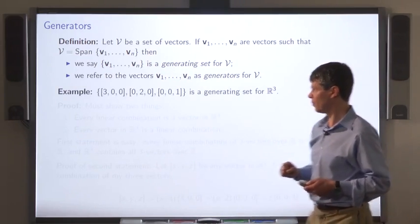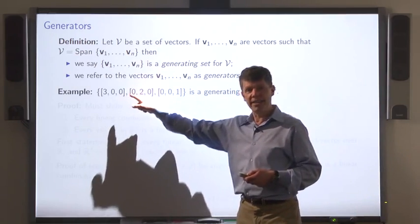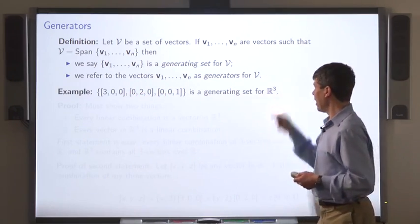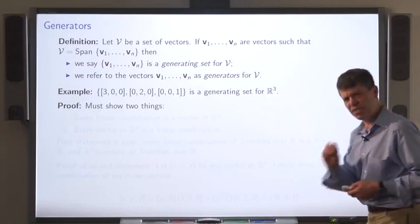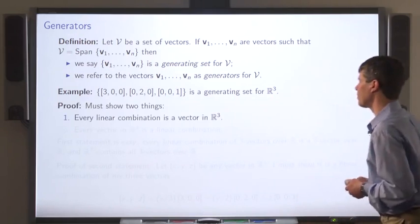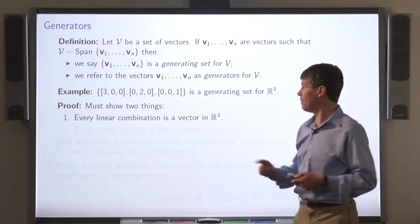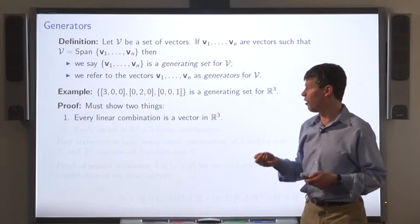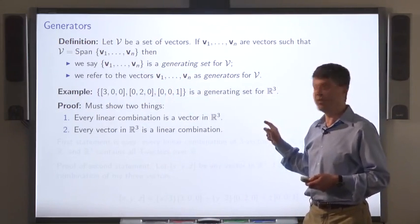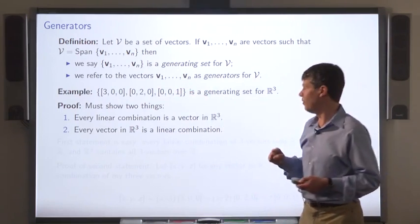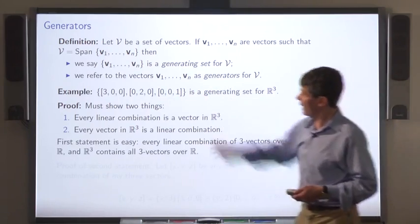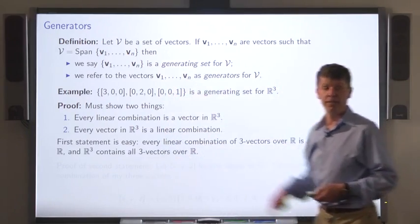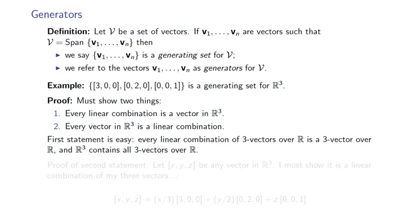Here's an example. I claim that these vectors are a generating set for R3. We have to show two things: first, that every linear combination of these vectors lies in R3, and second, that every vector in R3 is some linear combination of these three vectors. The first statement is pretty easy — each of these vectors is in R3. You multiply them by scalars, they're still in R3. You add them together, still in R3.